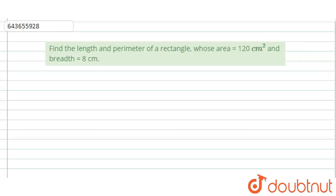Hi, welcome to this video. The question is: find the length and perimeter of a rectangle whose area equals 120 centimeter square and breadth is equal to 8 centimeter.